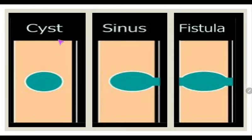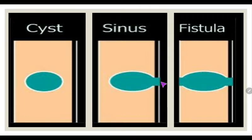This picture demonstrates the cyst, sinus with one channel, and fistula — a communication between two anatomical spaces.